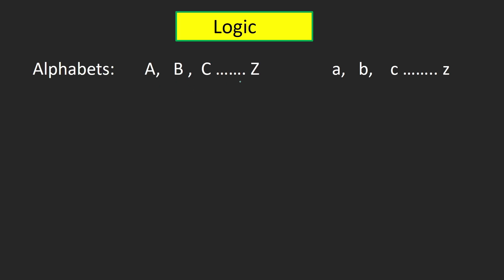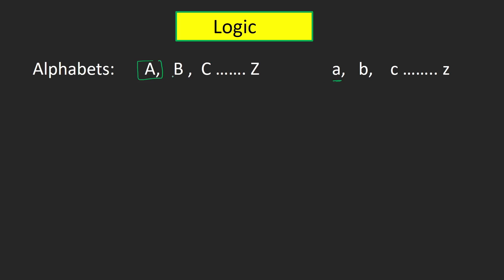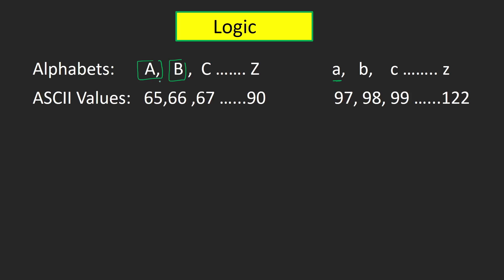In real life we differentiate uppercase and lowercase alphabets by their size — capital A is larger than small a. But in C language, the compiler needs a method to differentiate. Each character in C has an ASCII value associated with it — capital A has ASCII value 65, capital B has 66, and small a has 97.